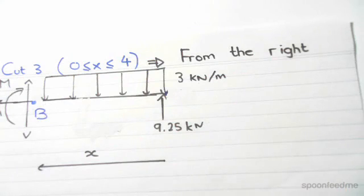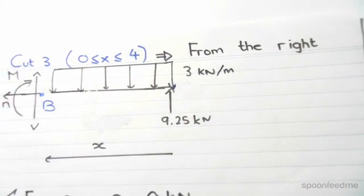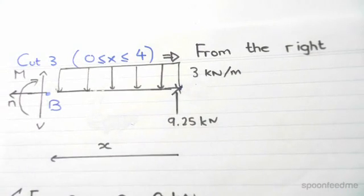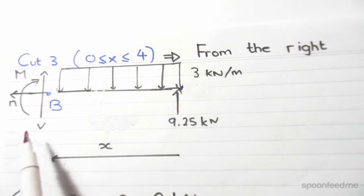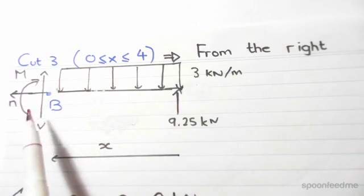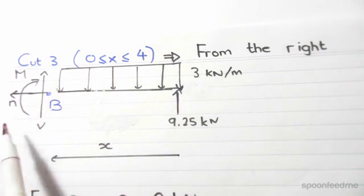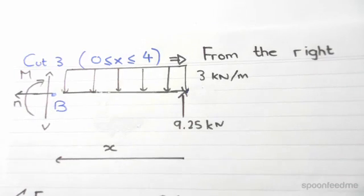It's also a function of x when we cut from the right. Same story - the only thing that differs here is the sign convention. Shear force points up, anti-clockwise moment, and an axial force that points out to the left. Okay, so now we just do normal equilibrium.